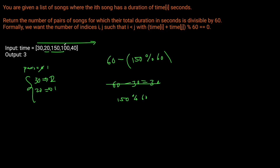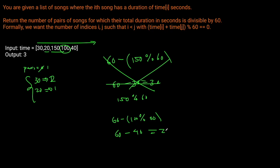Next is 100: not immediately divisible by 60. We look for 60 minus (100 modulo 60). 100 modulo 60 is 40, so we need 60 minus 40, which is 20. We have a 20 in the dictionary, so we increment pairs again. Then we add 40 to the dictionary.